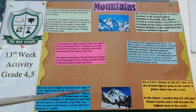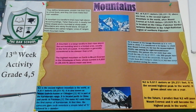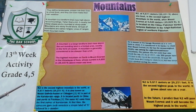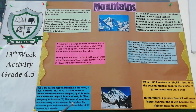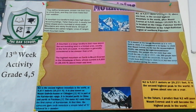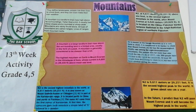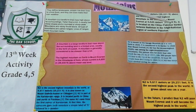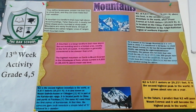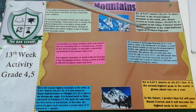K2 is the second highest mountain in the world. The peak of Karakoram is 8,611 meters, 28,251 feet above sea level. K2 is located in the Karakoram range in China. K2 has 8,611 meters, 28,251 feet above sea level — this is the second highest mountain in the world. After Mount Everest at 8,848 meters, 29,028 feet.